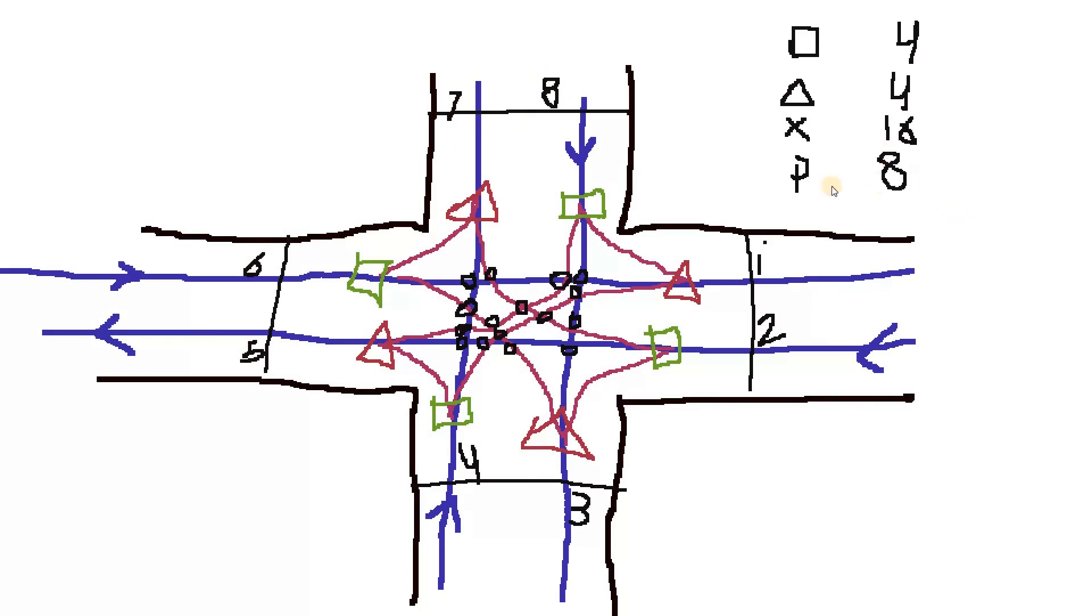Now we have a total of 32 conflicts in a four-leg intersection. Hope you can easily understand it. Thank you for watching.